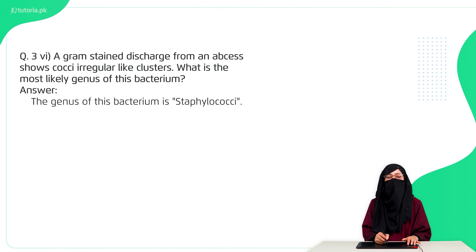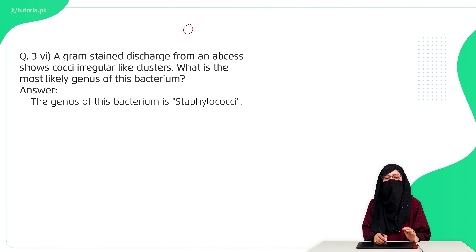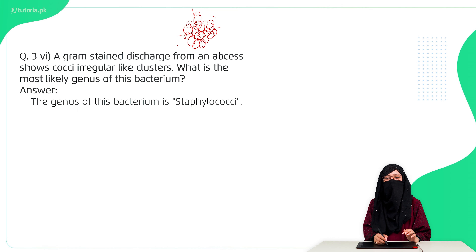Question six: a gram stain from a sample shows cocci in irregular cluster-like structures — which is the more likely genus? Cocci are normally arranged in a division plane, but here they appear in an irregular cluster with no plane of division. Such irregular cocci with no defined division plane are called staphylococci.